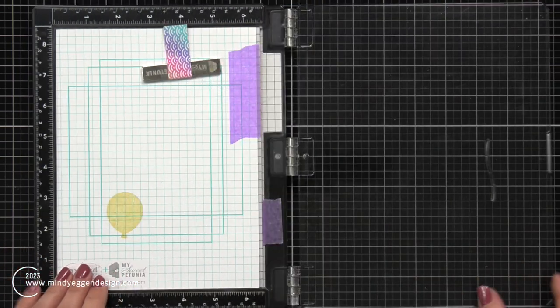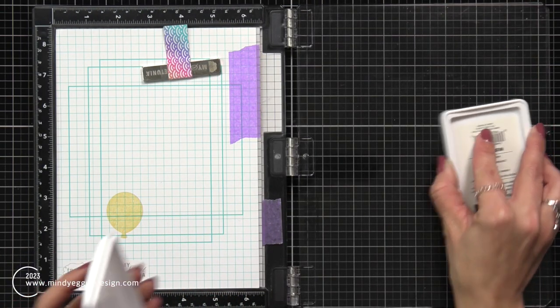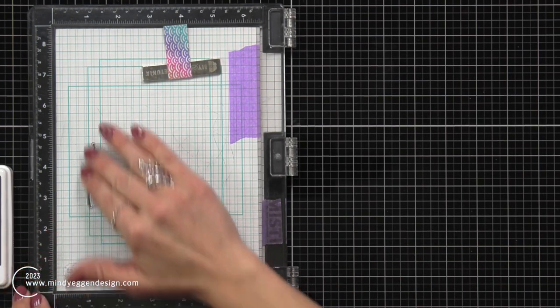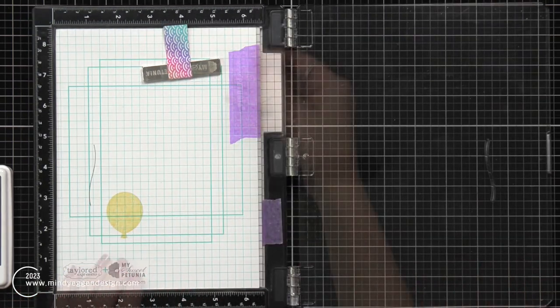I'm going to repeat all of those same steps for the strings for my balloon. And for this one, I will be using Mushroom Ink from Concord & 9th. Instead of a real stark black, I kind of just wanted to have this dark gray.